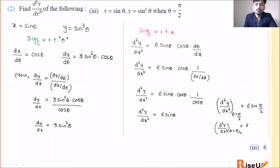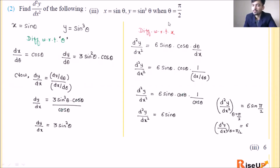Now the third question: find d²y/dx² — x = sinθ, y = sin³θ, when θ = π/2. We have the θ value, so we can substitute at the end. This type of problem we have already solved. Find the final answer and then put θ = π/2.